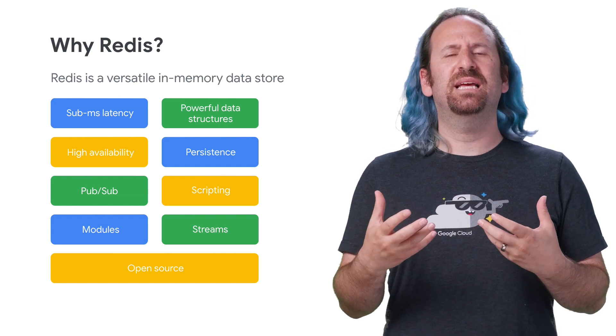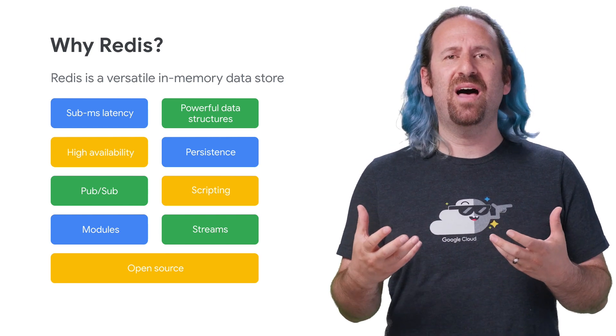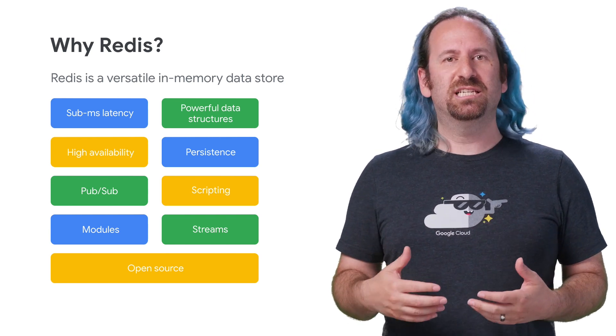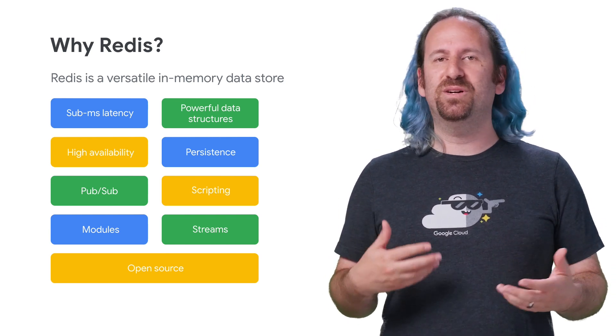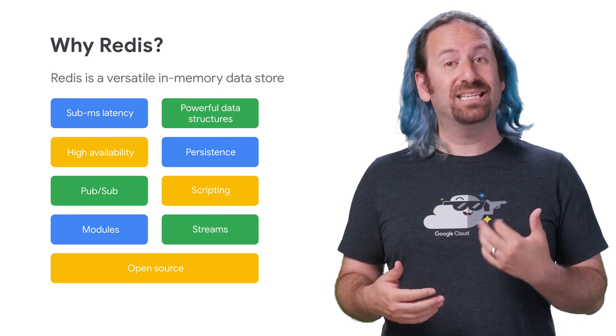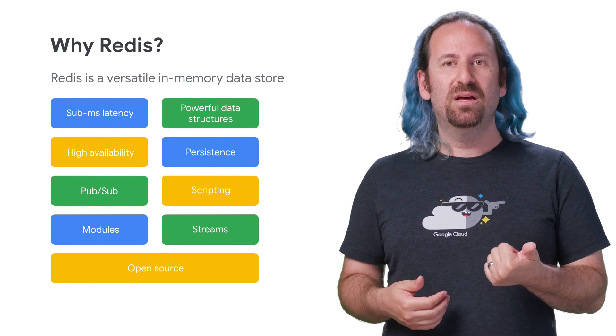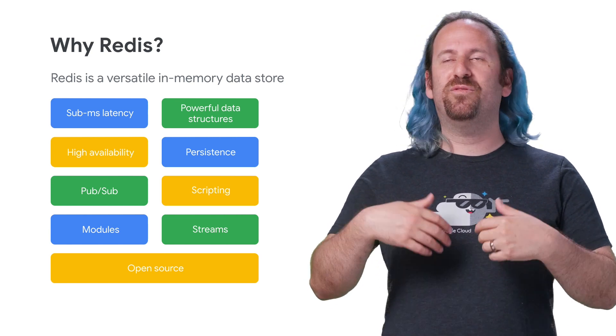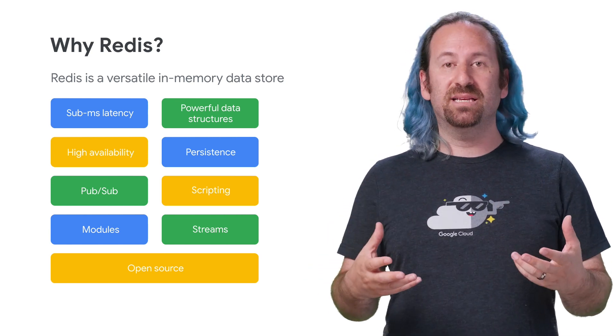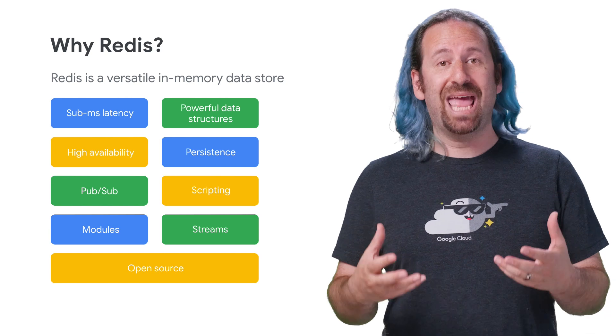Redis is popular because it's more than just a key-value store — it supports a bunch of different data structures, has high availability and persistence, and is usable for many different use cases, not just for caching.